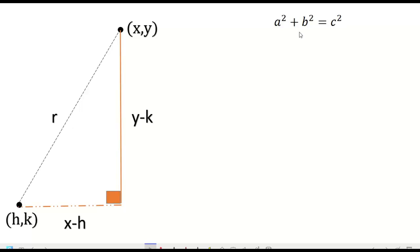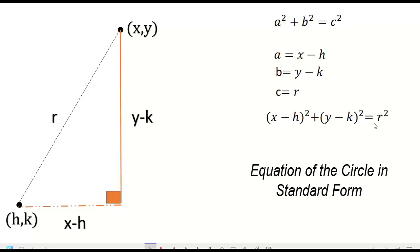our a is x minus h, our b is y minus k, while c is our hypotenuse r. By substitution, we get (x - h)² + (y - k)² = r², which is our derived equation of the circle in standard form.